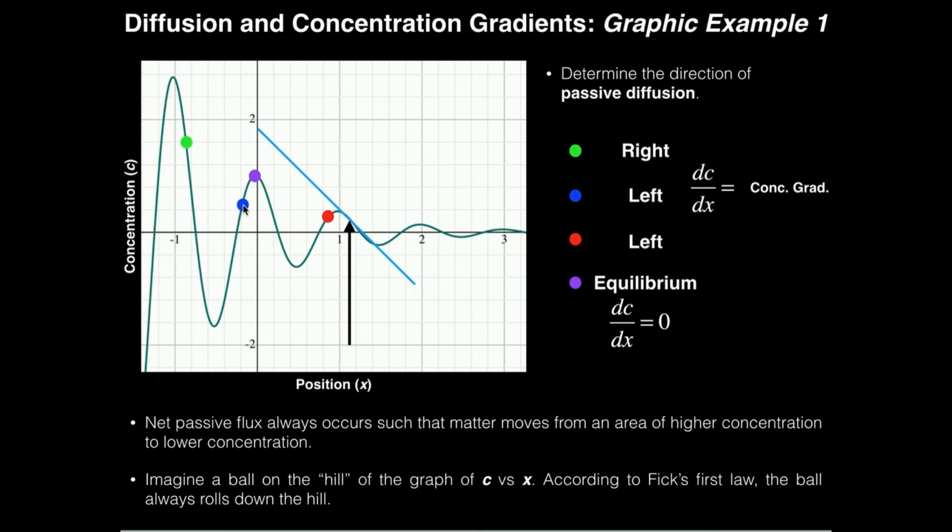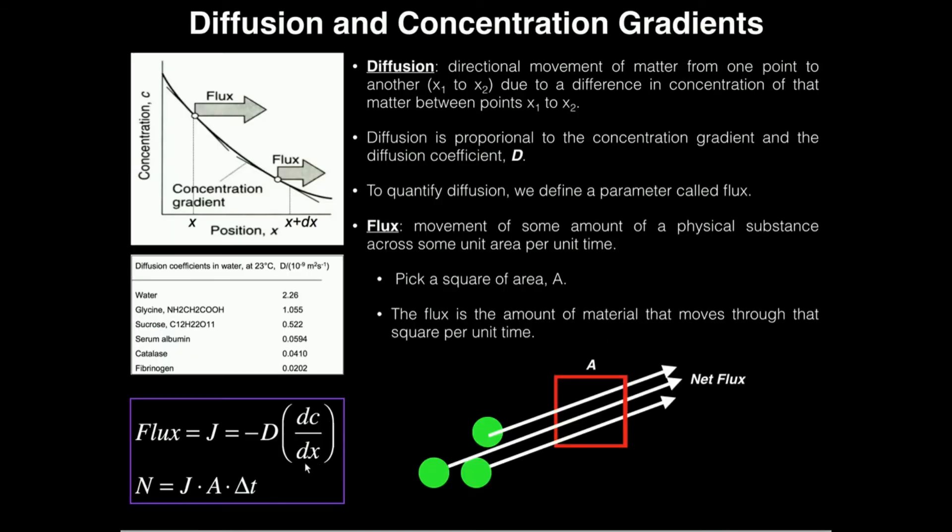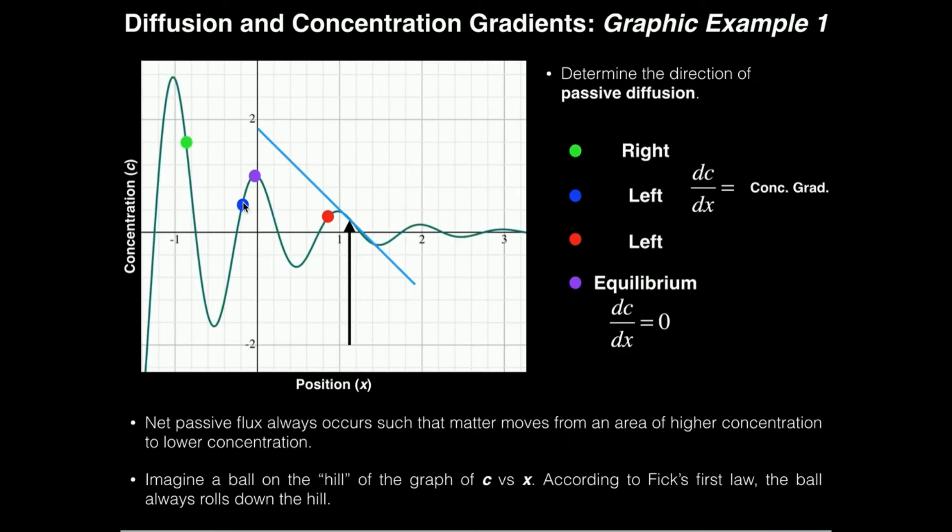Let's talk about the blue point. So what's the concentration gradient here? It's positive, right? So if we have a positive concentration gradient, we multiply times a positive number times a negative, so the flux is negative, and the negative direction for flux is to the left. Negative is left, positive is right, but this is negative, so the blue point has net flux to the left.